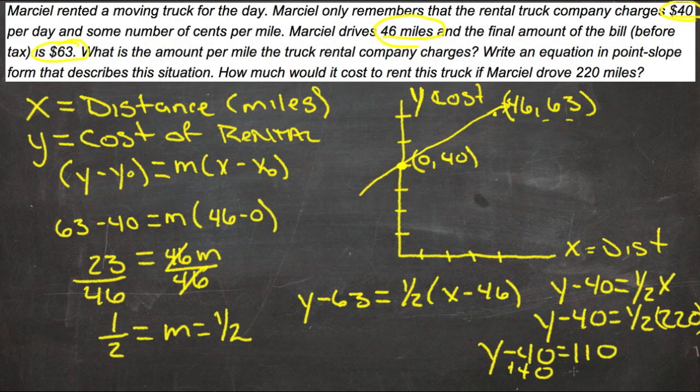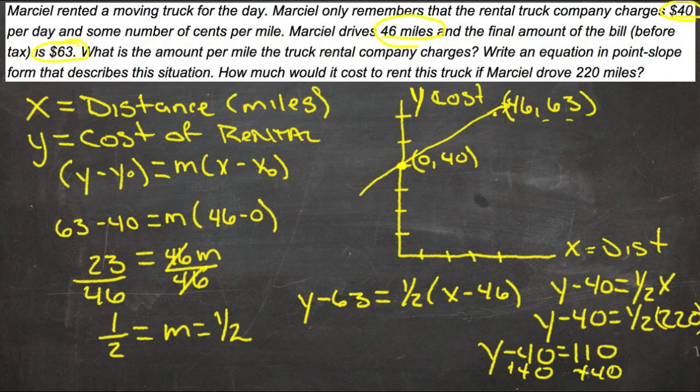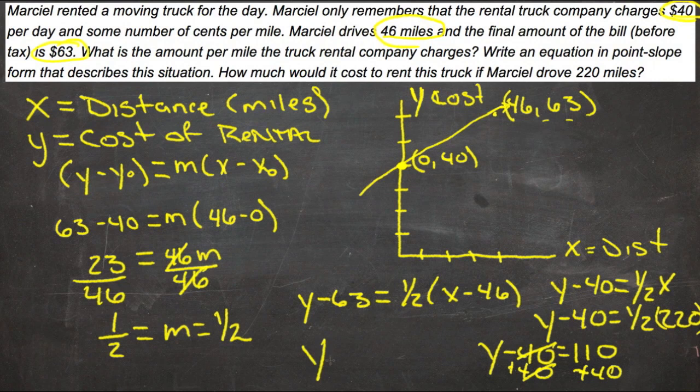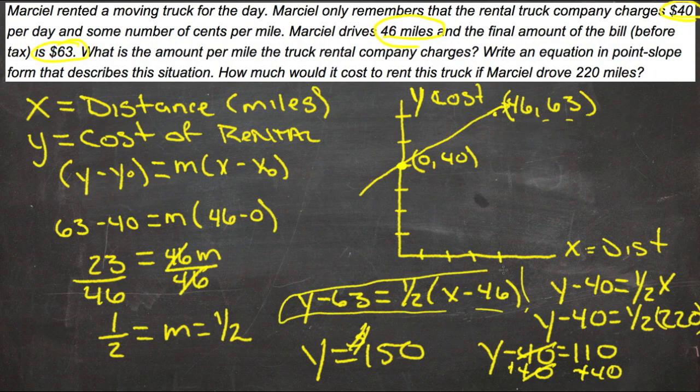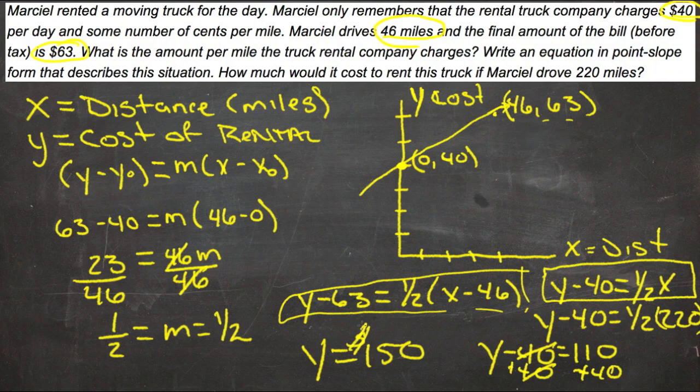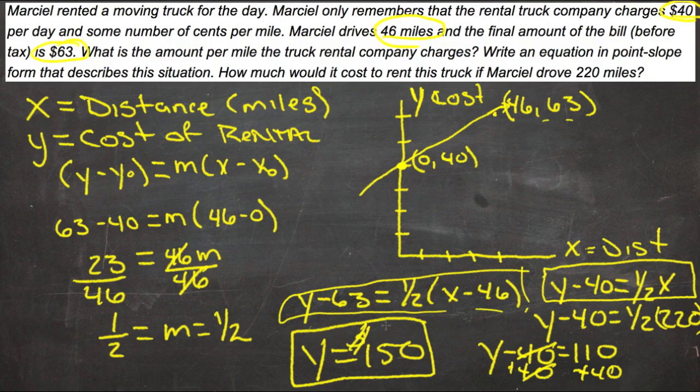So our equation in point-slope form is either of these two—either this one or this one—and then our final value is $150 if he had driven 220 miles.